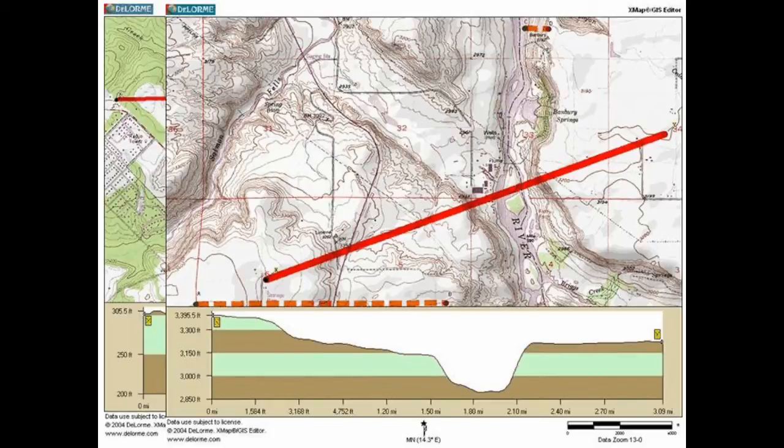Let's assume that the lowest layer contains an ore-bearing vein of gold, but I own a property to the far left of the property. How deep would I have to dig down? Well, with this profile, as you have drawn it, you can now tell how deep the shaft would need to be to get to the ore-bearing layers.